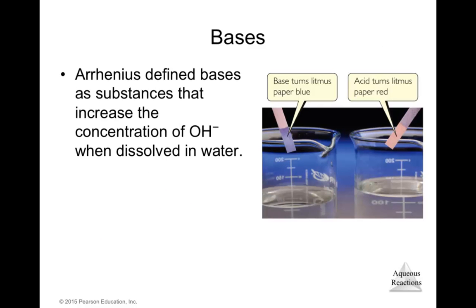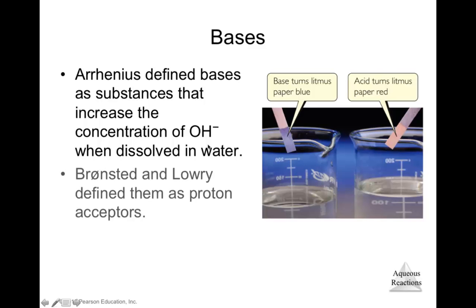Arrhenius defined bases as substances that increase the concentration of hydroxide ions (OH⁻) when dissolved in water. Brønsted and Lowry defined bases as proton acceptors. We can also identify a liquid as acid or base using litmus paper — a base turns litmus blue, while an acid turns litmus red.